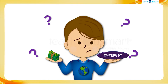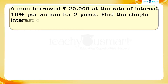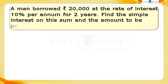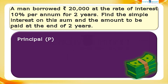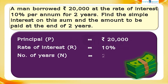Let's try to understand by doing a problem. A man borrowed 20,000 rupees at the rate of interest of 10% per annum for two years. Find the simple interest on this sum and the amount to be paid at the end of two years. The borrowed amount is considered as principal P, which equals 20,000 rupees. The rate of interest R equals 10%, and the number of years N equals 2 years.